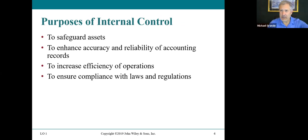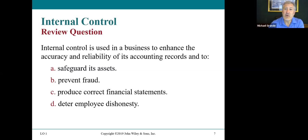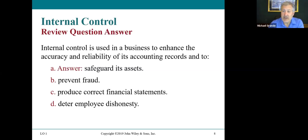The purposes of internal control are: to safeguard assets such as cash, laptops, computers, and inventory; to enhance the accuracy and reliability of accounting records; to increase efficiency of operations; and to ensure compliance with laws and regulations. Internal control is used to enhance accuracy and reliability of accounting records. It can't prevent fraud — it can reduce the possibilities. The goal for financial statements is fair and reasonable, not 100 percent correct.